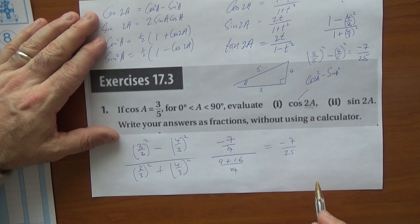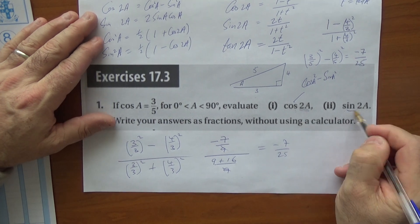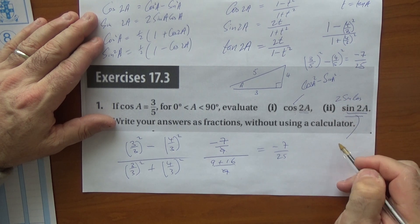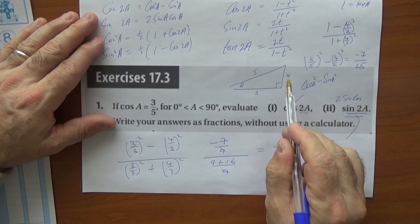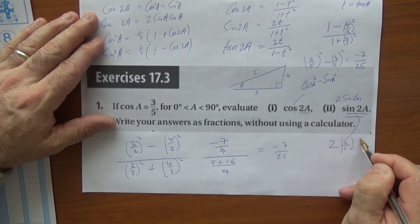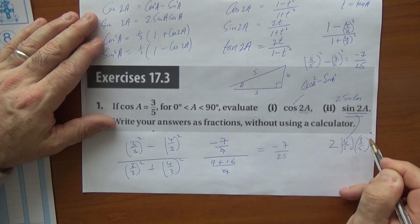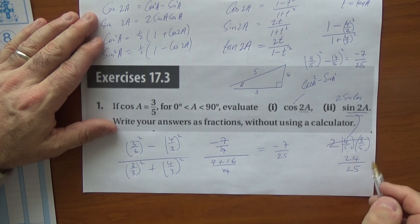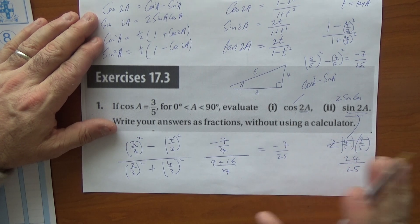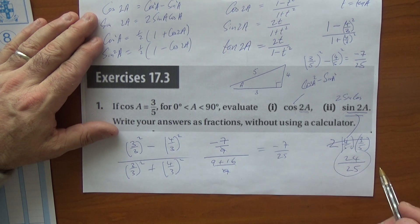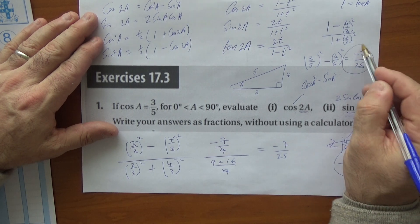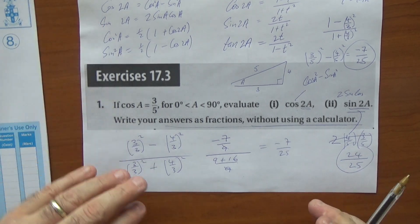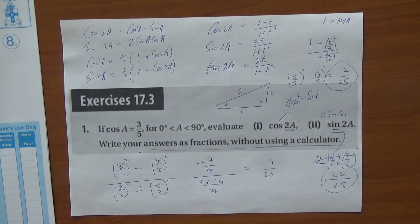For sin(2a), the formula is 2·sin(a)·cos(a), giving us 2 × (4/5) × (3/5) = 24/25. A word of warning: never accept a sine or cosine value bigger than 1 or less than -1. Both answers are in the valid range. Write your answers as fractions and don't use a calculator.